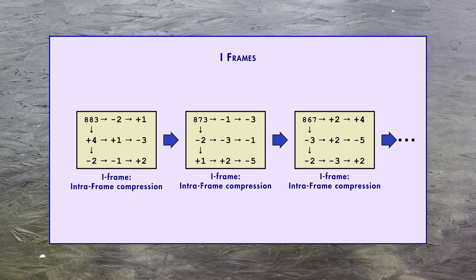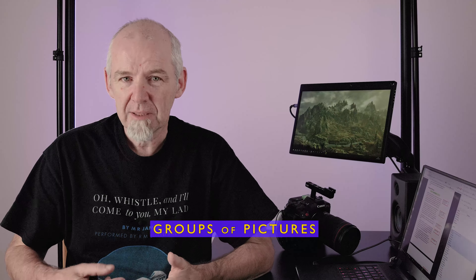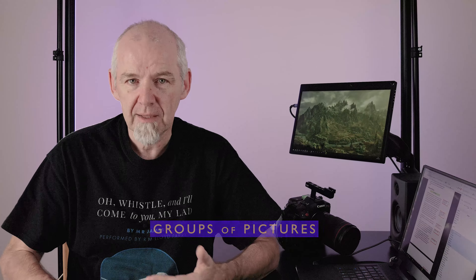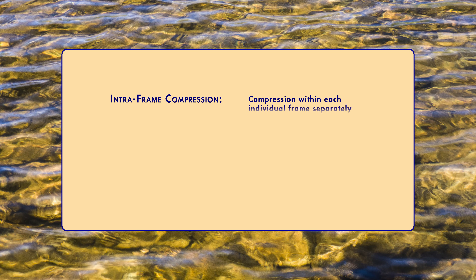A frame compressed this way is called an iframe. You can encode a whole movie this way, where every frame is an iframe. This is called all-intra encoding — in other words, every frame is a complete picture in itself and the only compression is within each individual frame. This is basically the Motion JPEG idea, but it's also used in more modern video formats like ProRes.